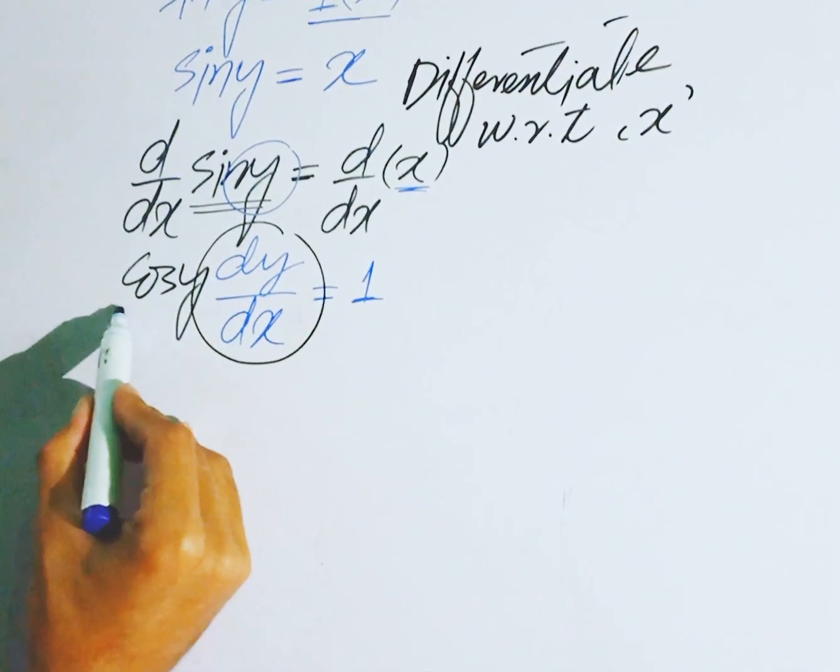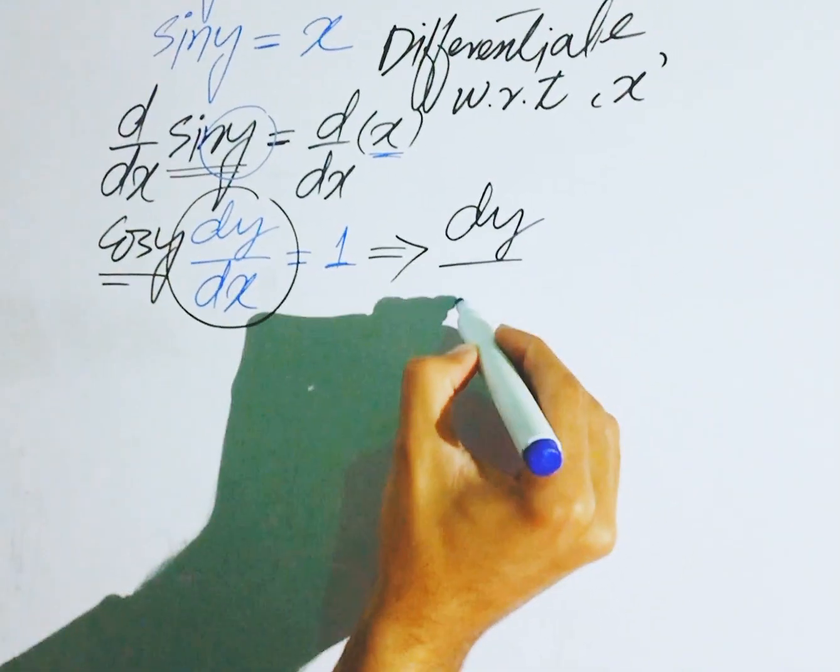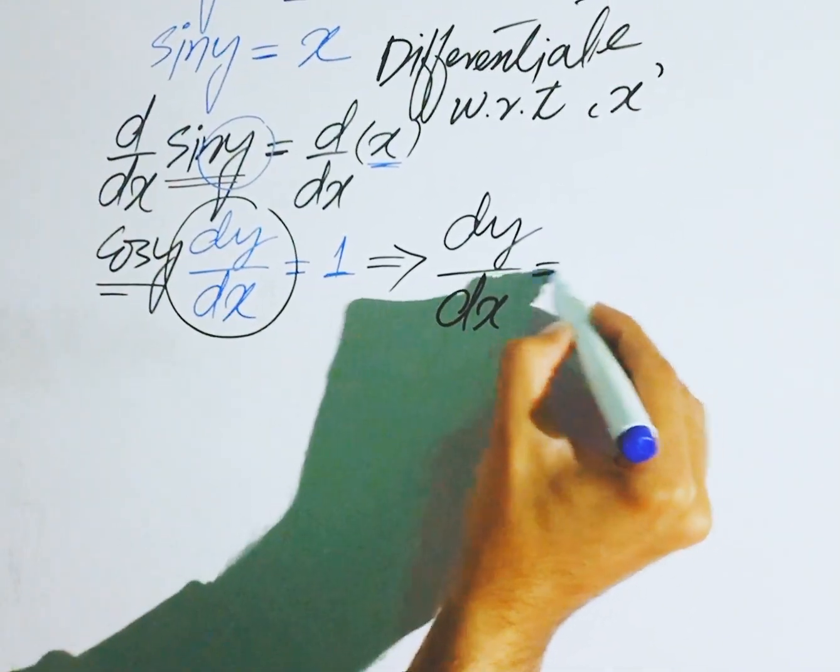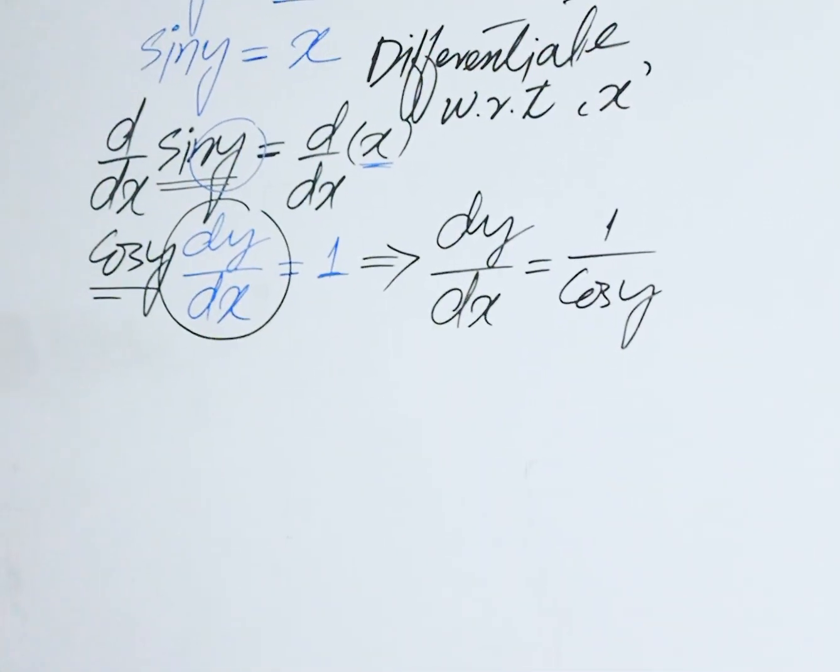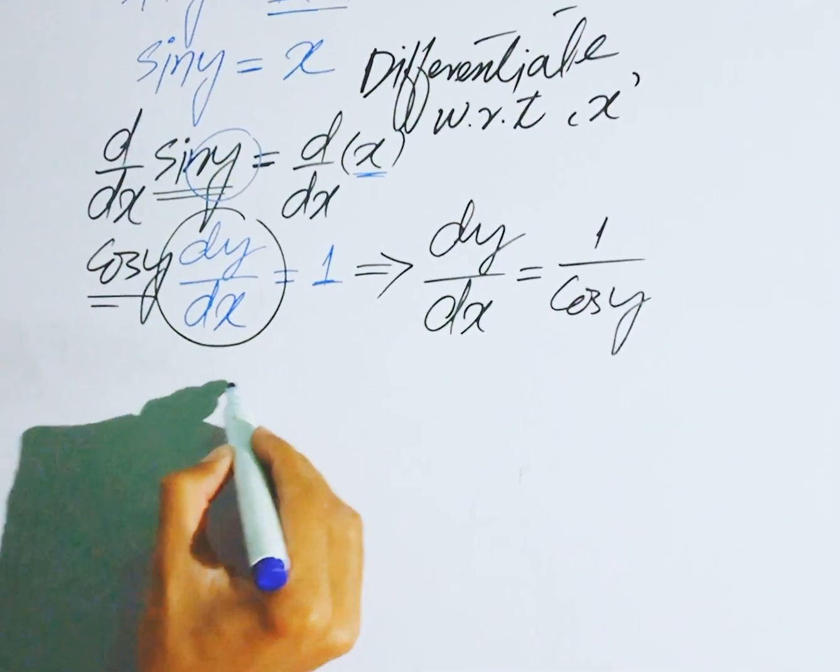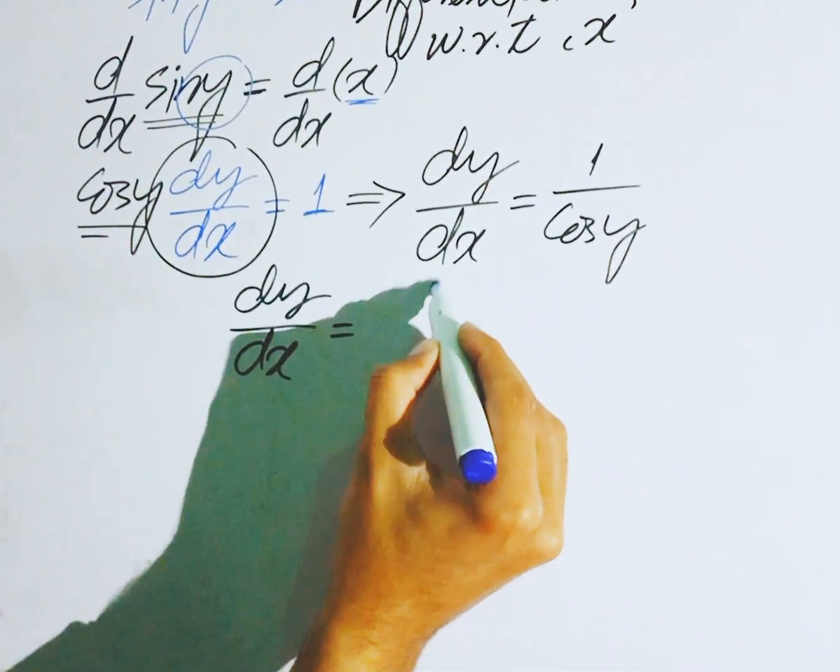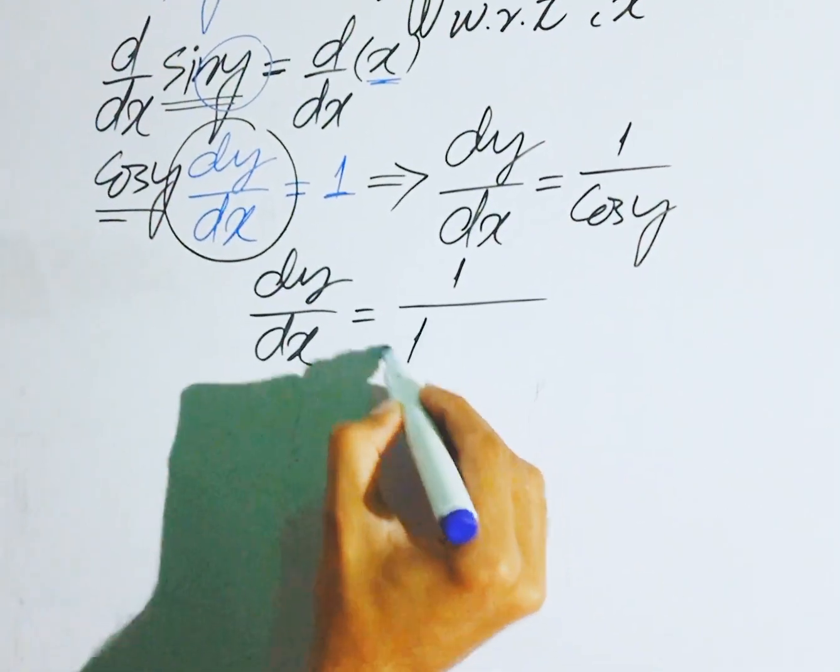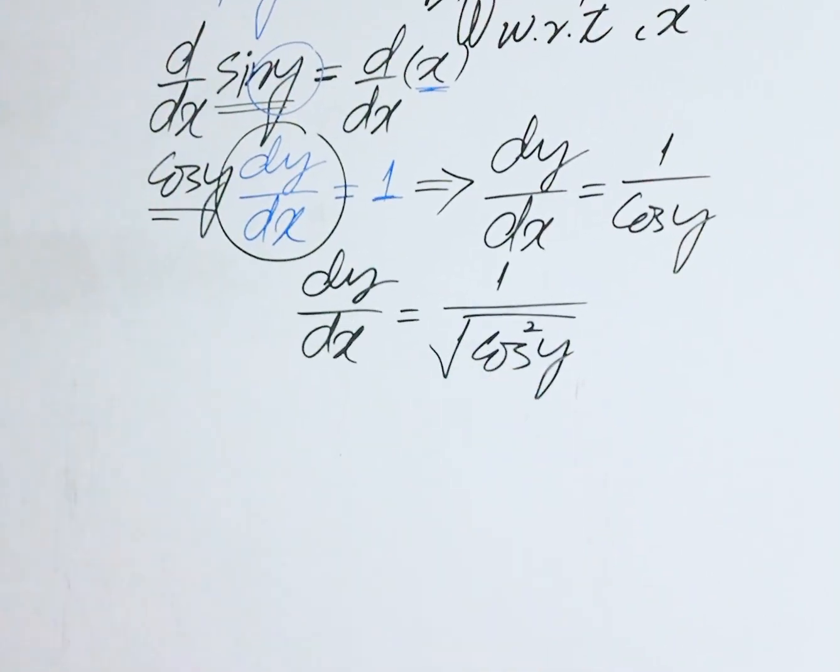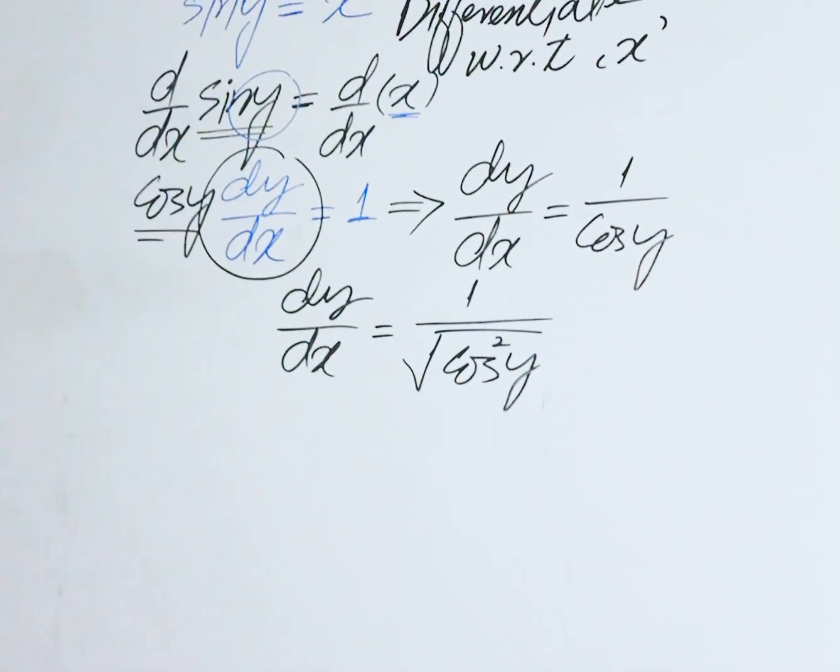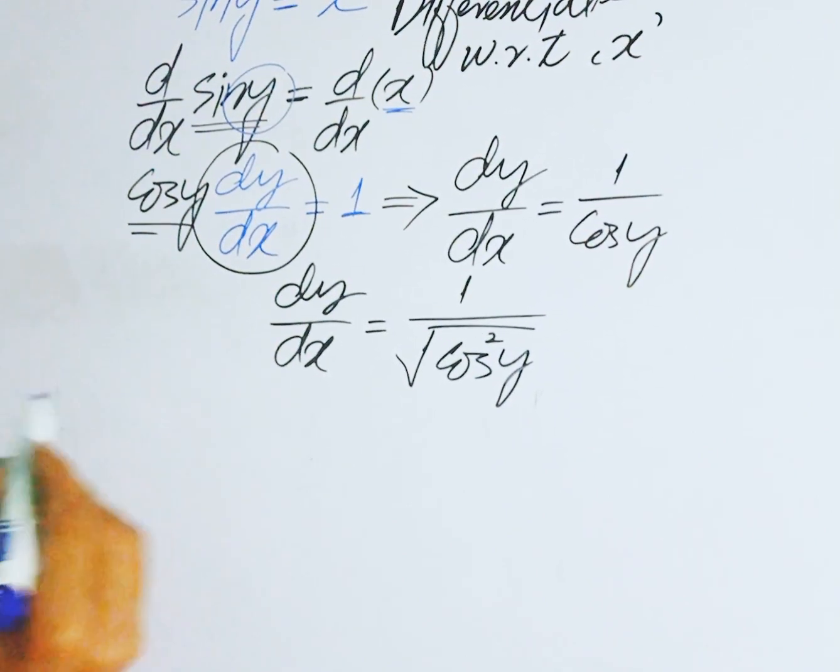The derivative of sine y with respect to x, we need to find dy over dx. Divide both sides by cos y, so this will be dy over dx is equal to 1 divided by cos y. Here we can write dy over dx is equal to 1 divided by square root of cos square y, because square root cancels to give you back 1 divided by cos y.